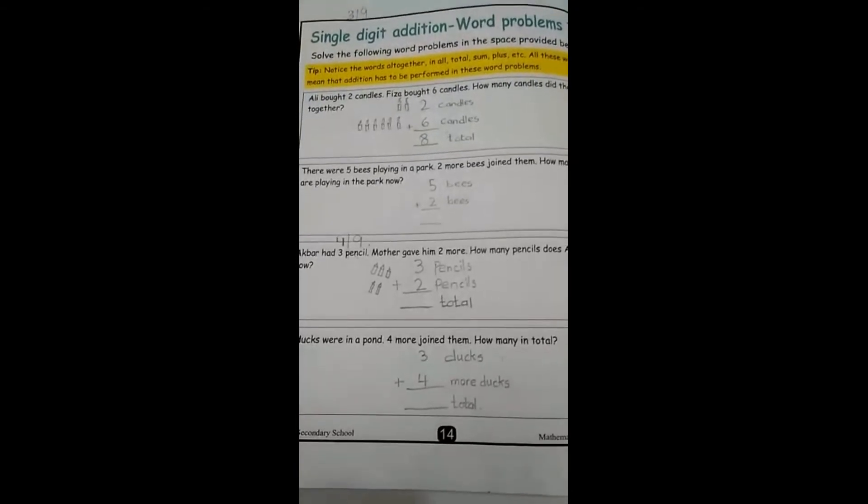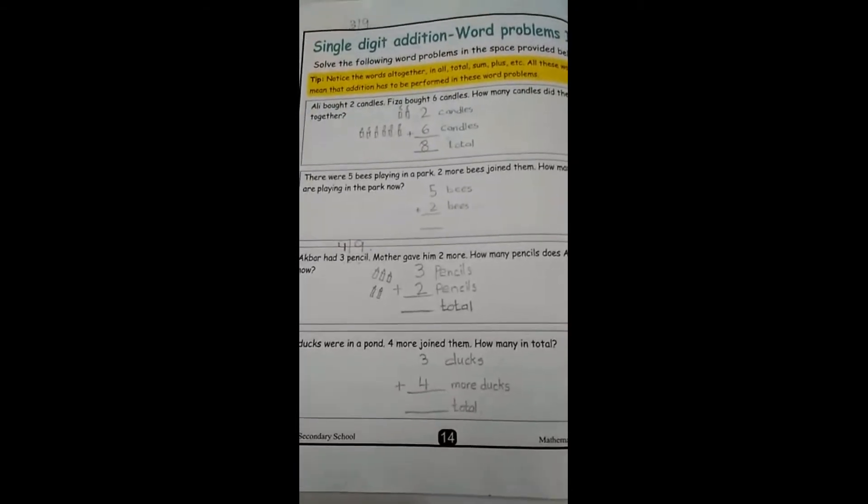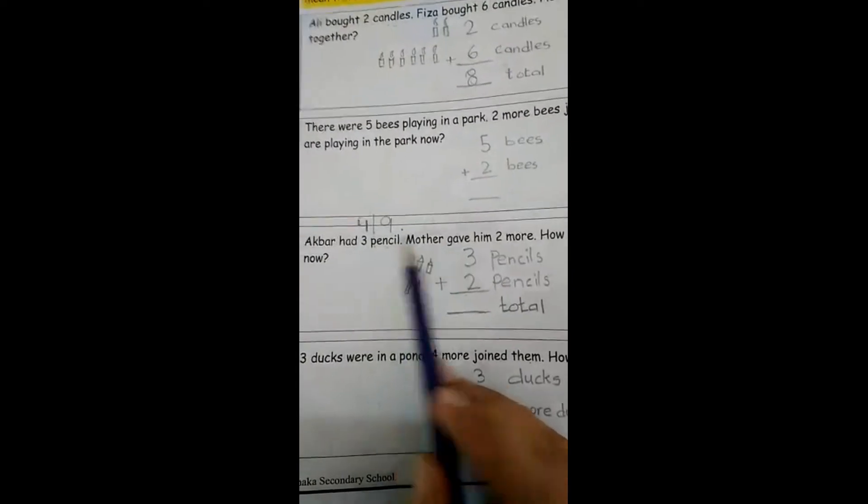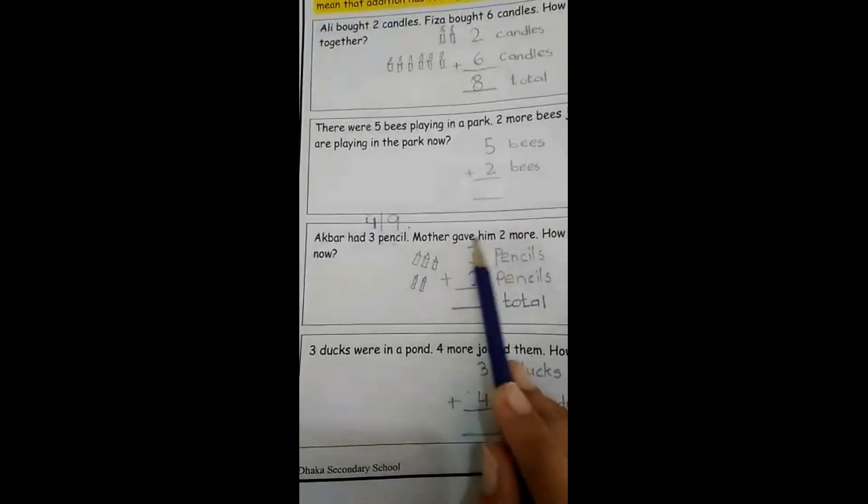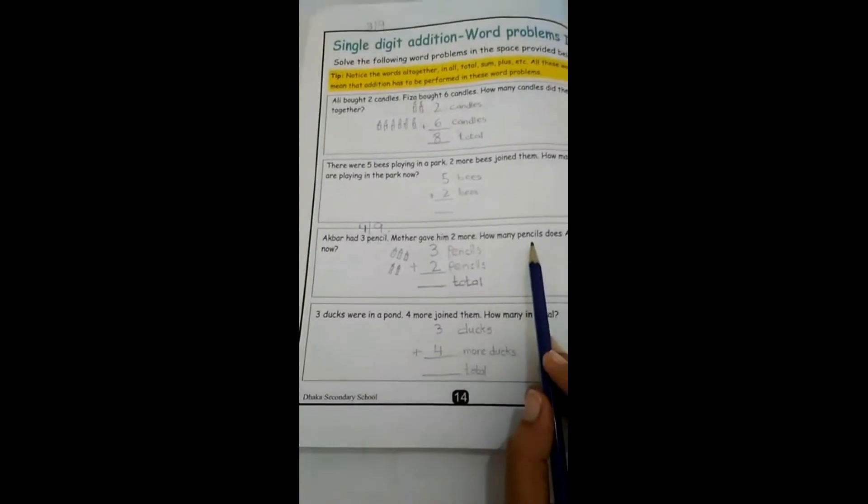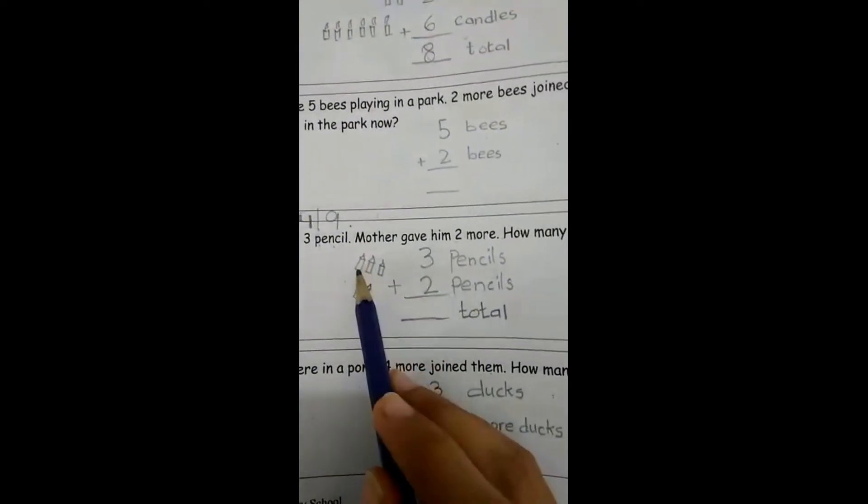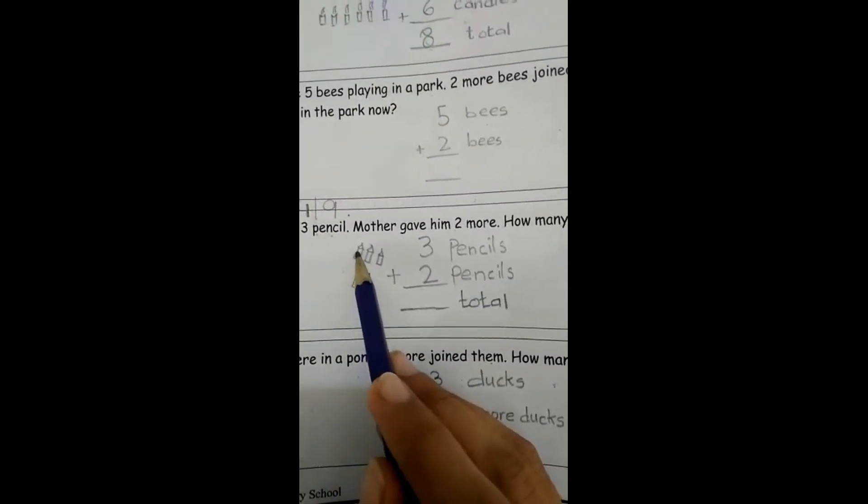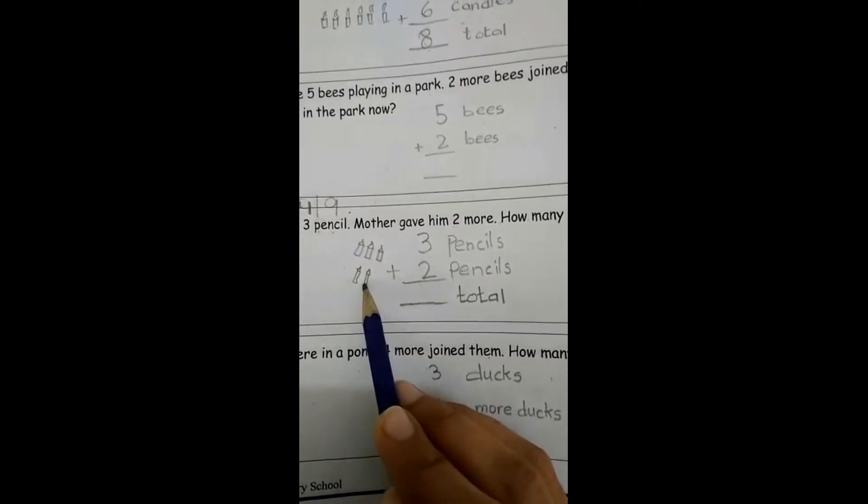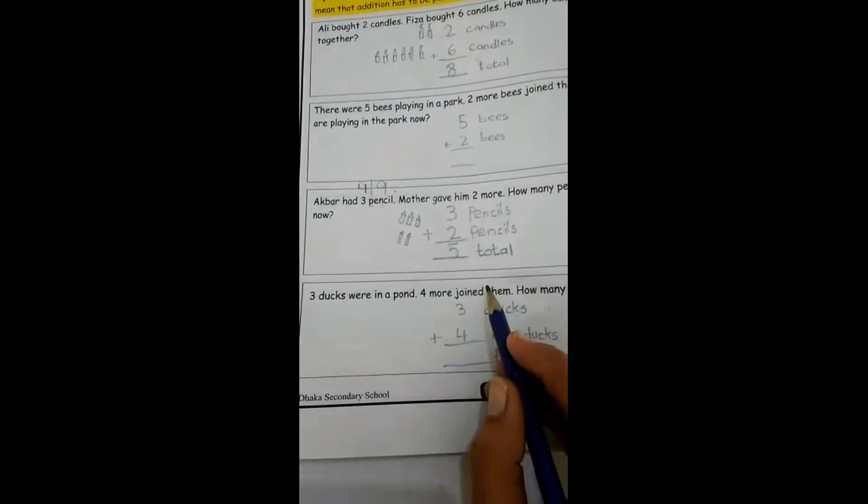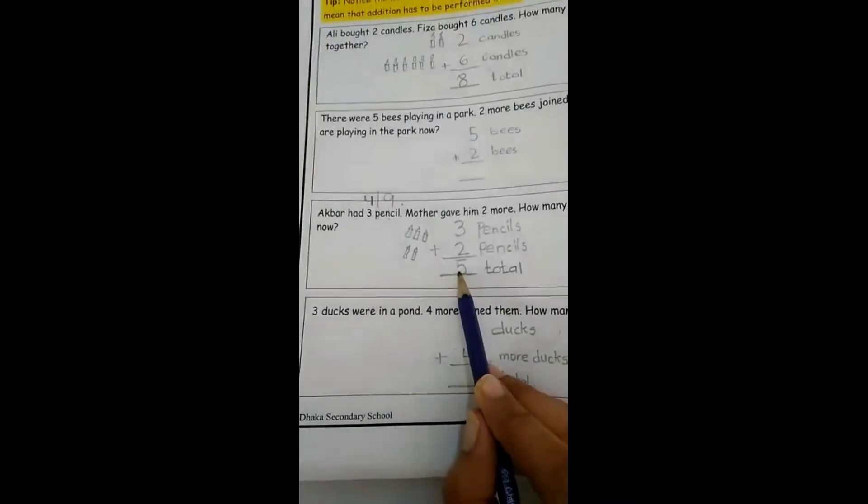Now open your maths book page number 14. Yesterday we did two word problems of single digit addition and today we are solving two more word problems. Akbar had three pencils, mother gave him two more. How many pencils does Akbar have now? This is an addition word problem. One, two, three, four, five. Total five pencils Akbar have now.